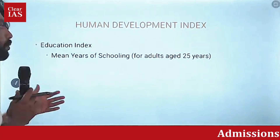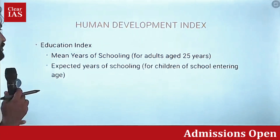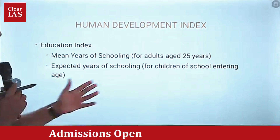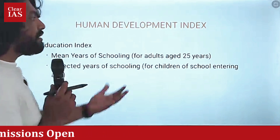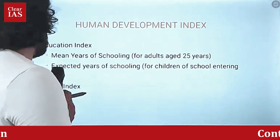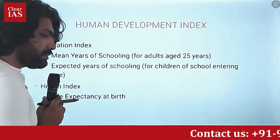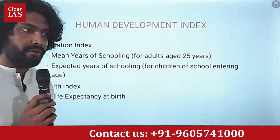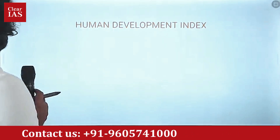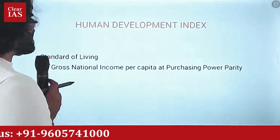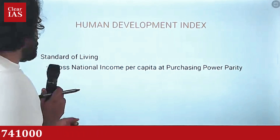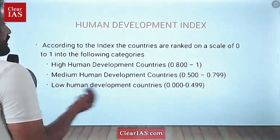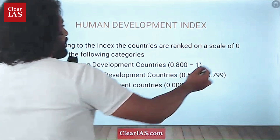To recap: the education index covers mean years of schooling for adults aged 25 and expected years of schooling for children of school-entering age. The health index is life expectancy at birth. Standard of living is gross national income per capita at purchasing power parity. According to the index, the countries are ranked on a scale of 0 to 1.